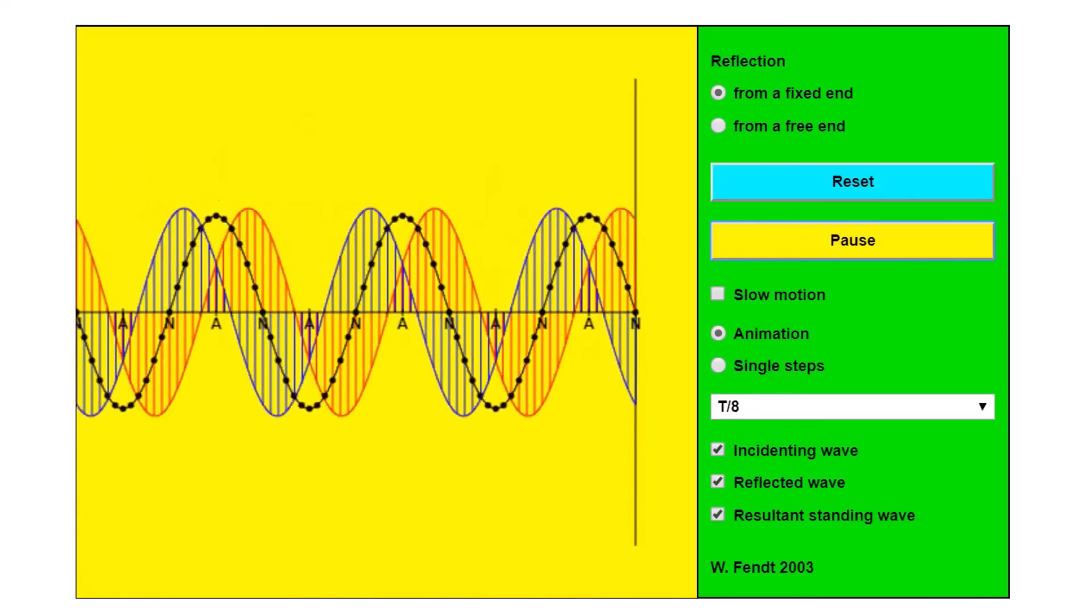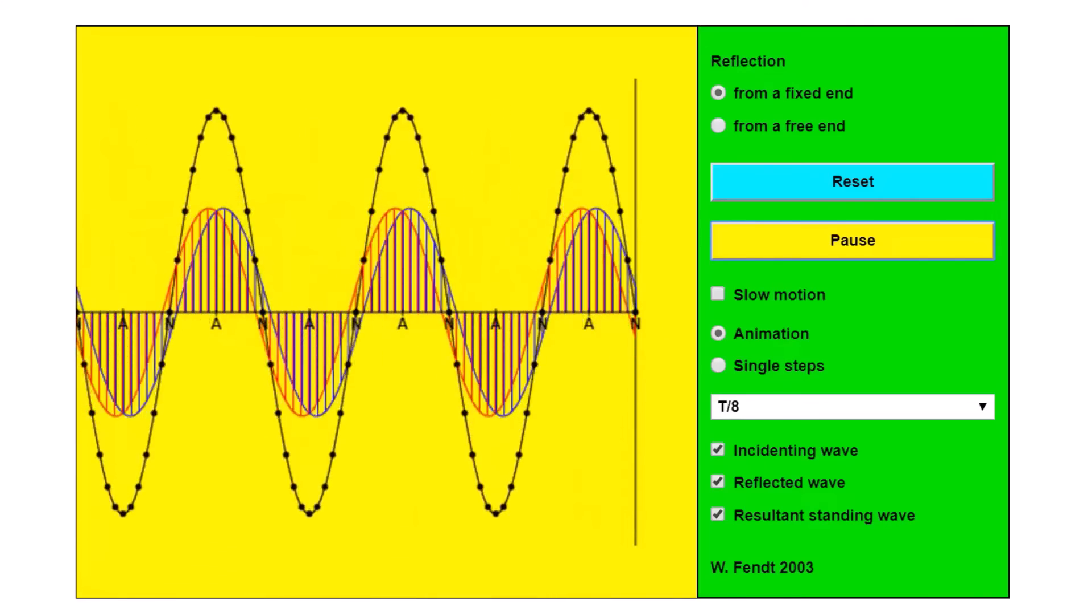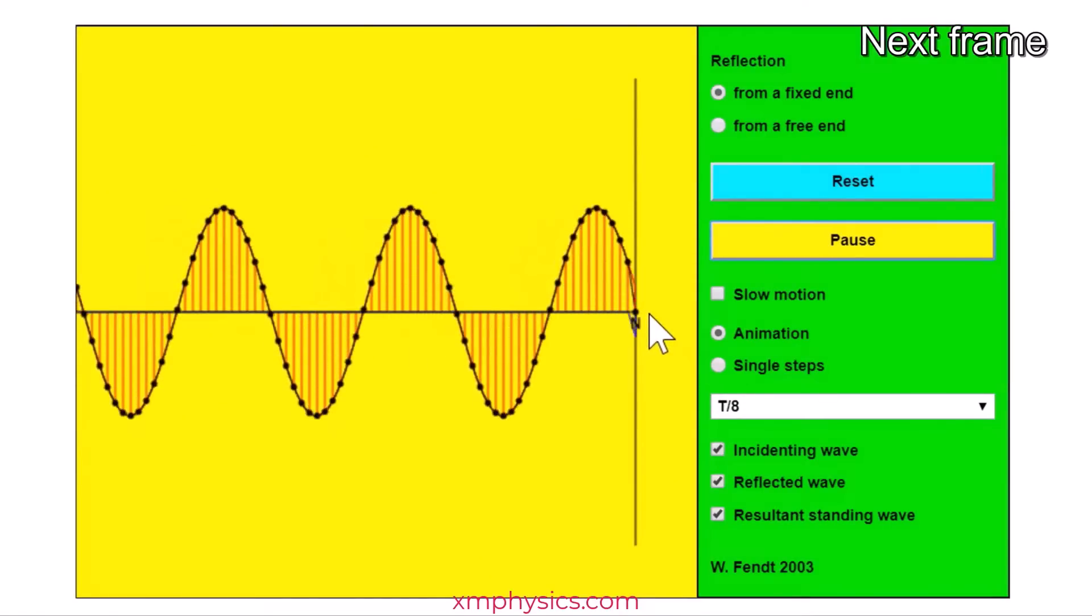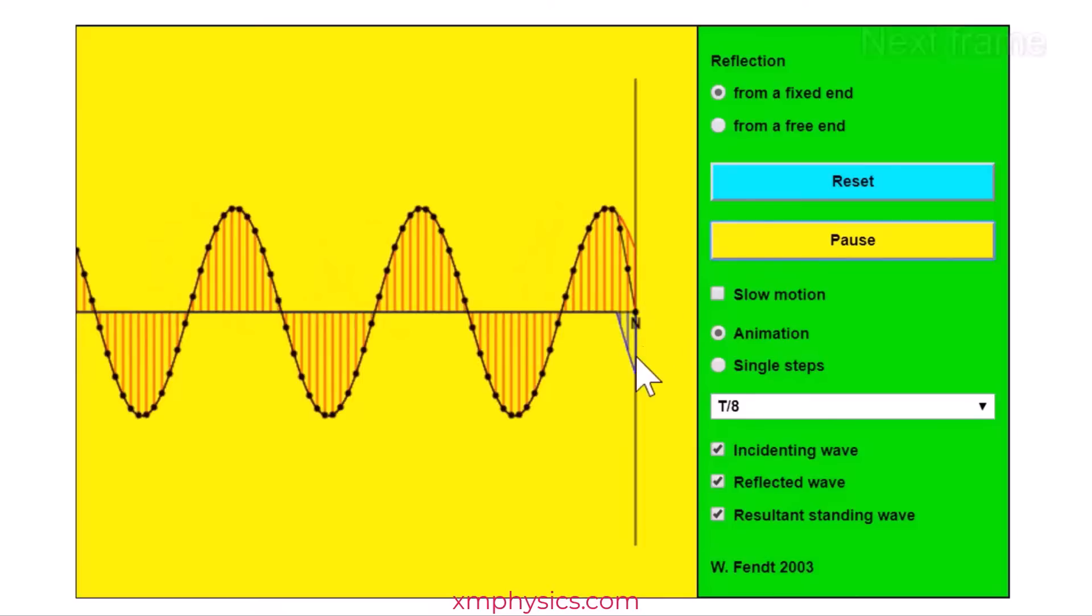But what about if we think in terms of the incident and reflected waves? Because it's a fixed end, when the incident wave reflects, it reflects with a phase change of 180 degrees. It flips around.